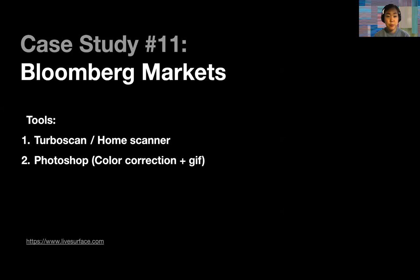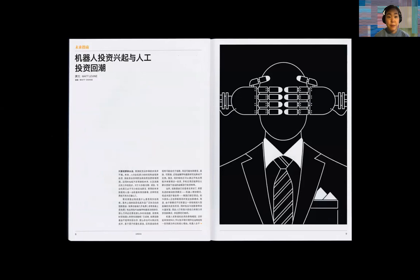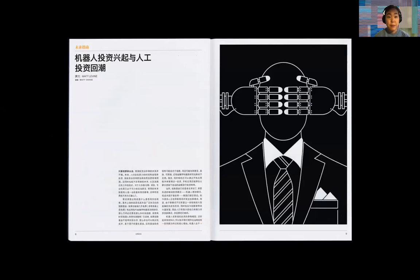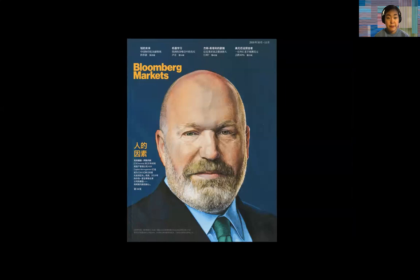I wanted to talk about a project my studio did for Bloomberg Markets, the Chinese edition of this magazine — documented using tools you might have at home. TurboScan is a really cheap application, just a couple of dollars on the app store, that basically turns your iPhone into a scanner. You can also use a cheap home scanner. We used Photoshop for color correction and to produce a GIF. After scanning with TurboScan, we brought it into Photoshop, cut the edges of the publication, put it on a black background, and used Photoshop to turn the sequence of images into a GIF.